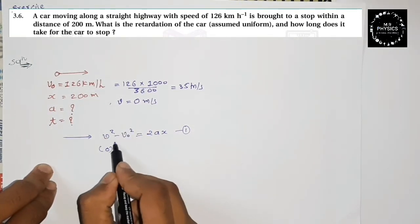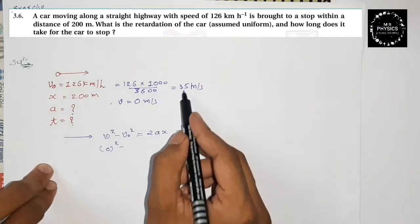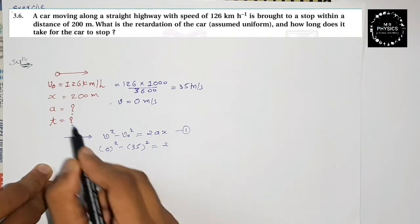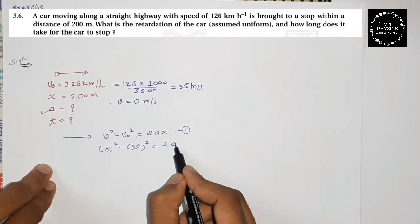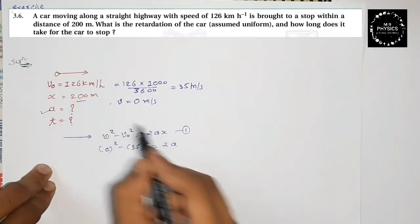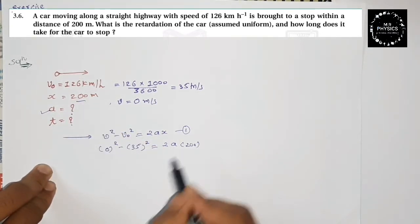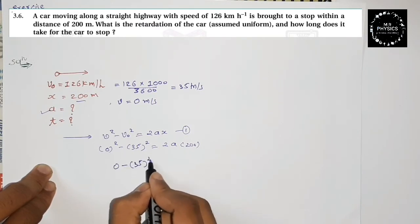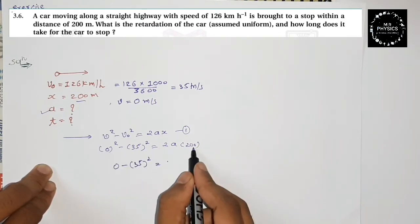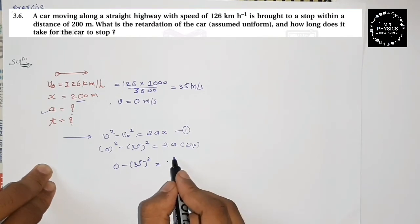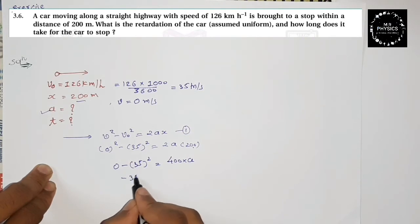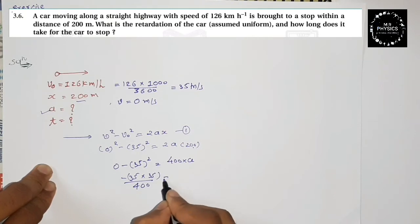v₀ squared — which is 35 squared — and we keep acceleration as a, and x is the distance given, which is 200 meters. So we get: 0 minus 35 squared equals 2 into 200 into a, which gives us: minus 35 times 35 divided by 400 equals a.